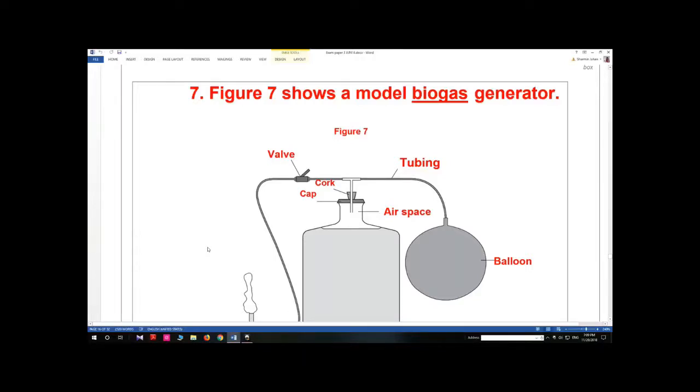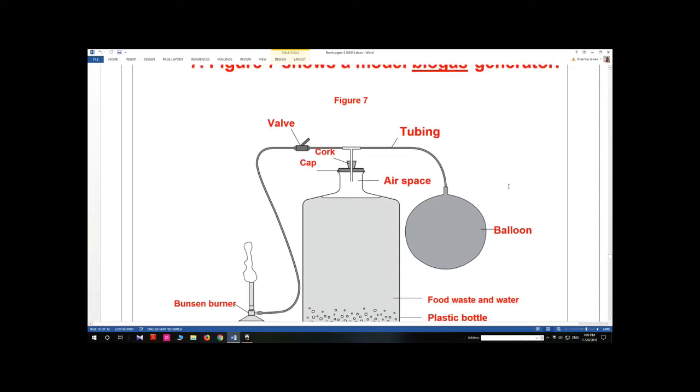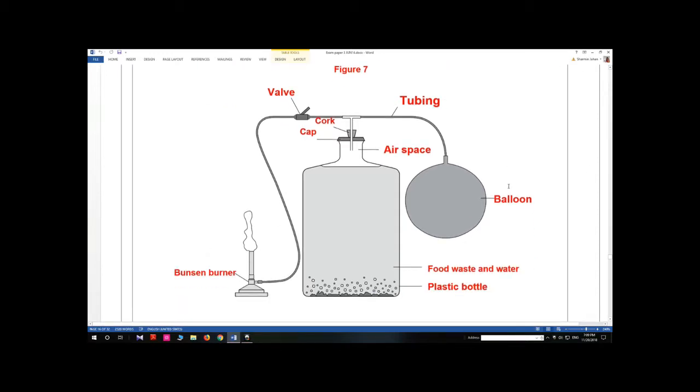Figure 7 shows a model biogas generator. You can see the components: food waste and water in a plastic bottle, an air space, a balloon, tubing, a valve, core cap, and Bunsen burner.